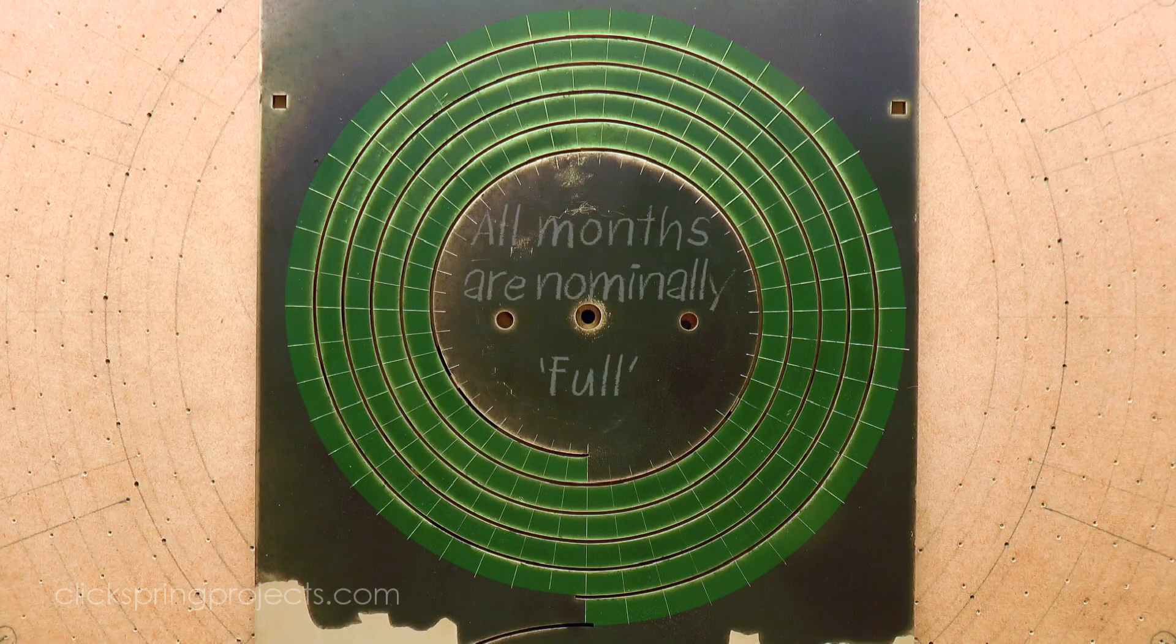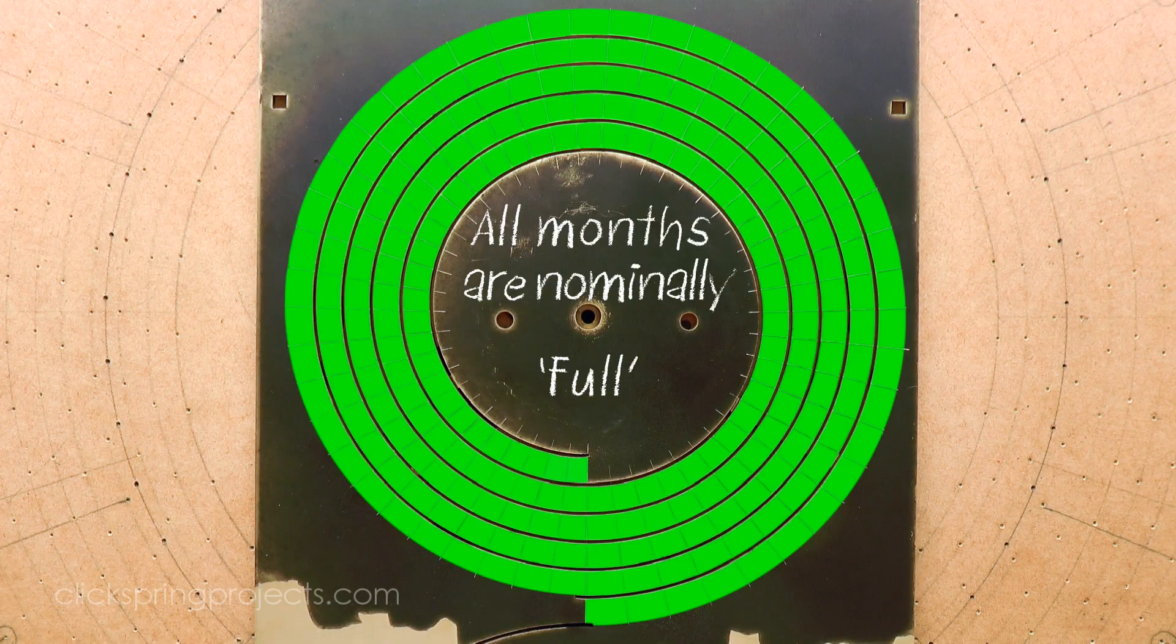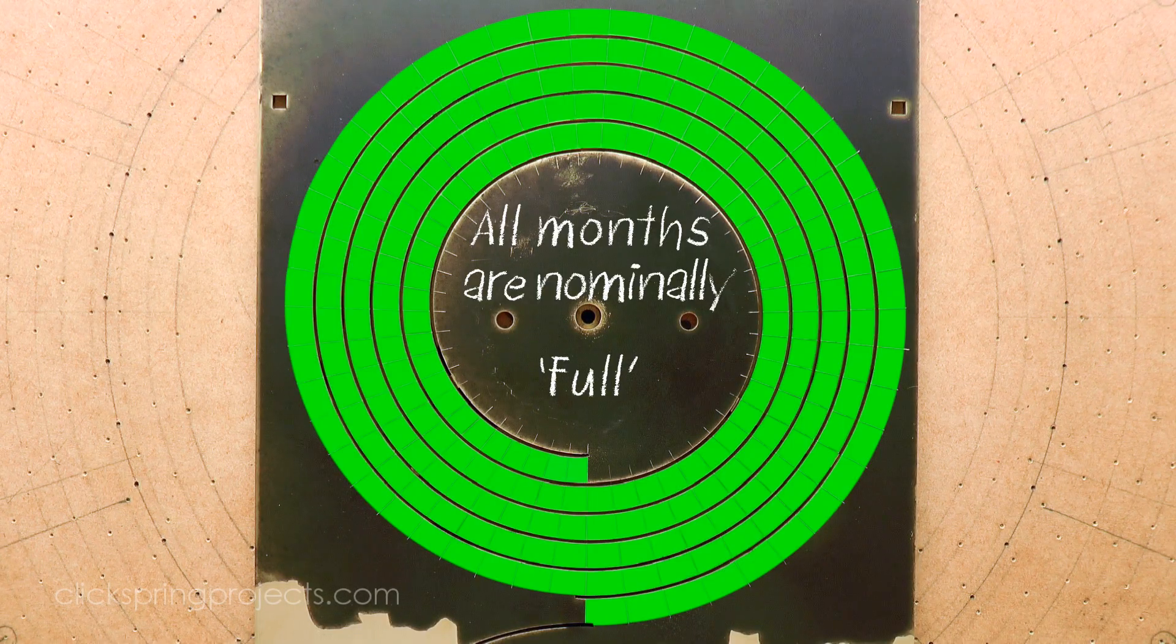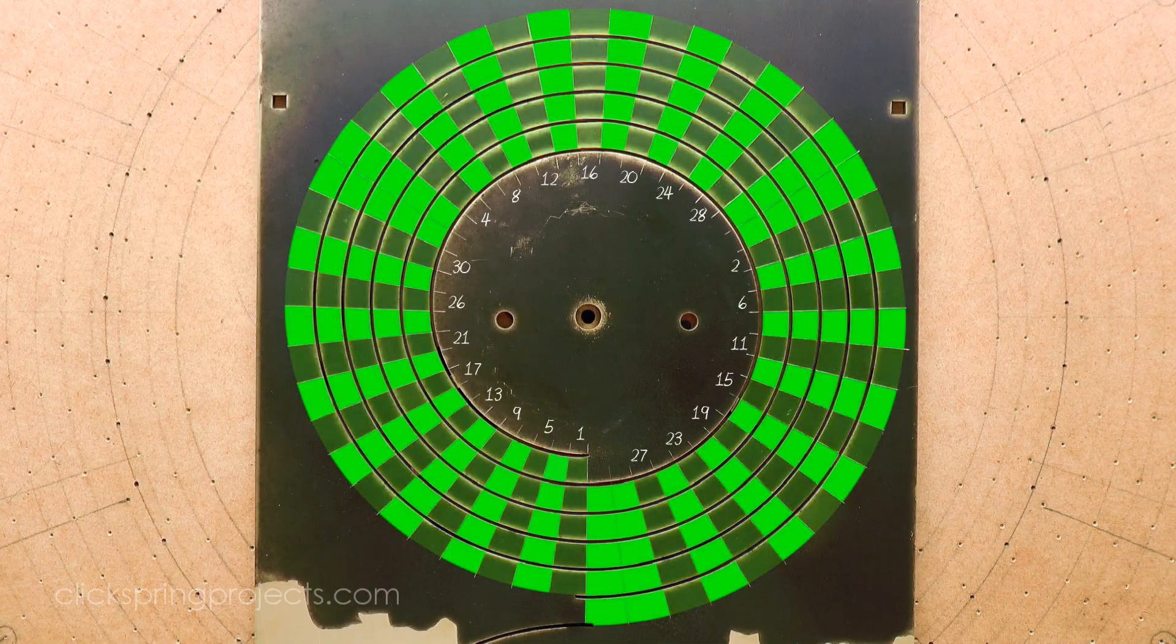All months were nominally presented as being 30 days in duration, or what's known as full. However, 110 months were prescribed to drop a day, to be 29 days in duration, and so become hollow.